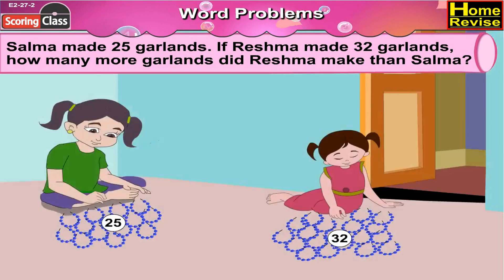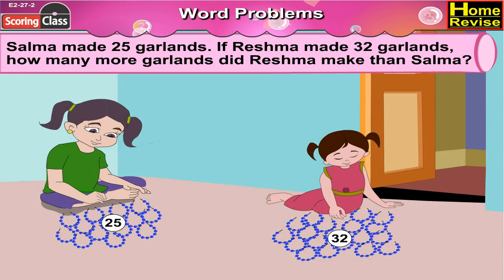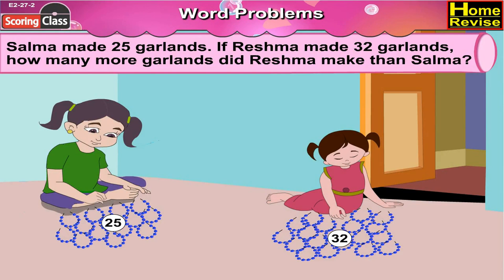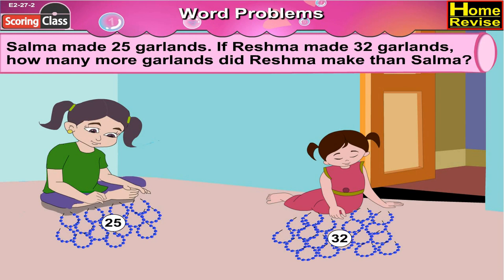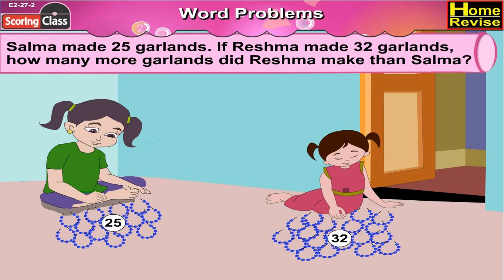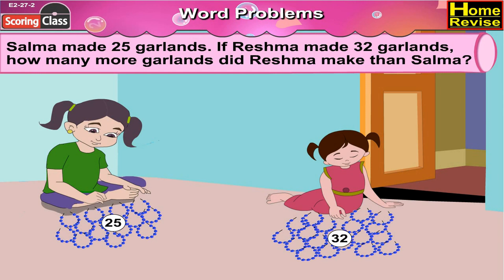If Reshma made 32 garlands, how many more garlands did Reshma make than Salma? Salma made 25 garlands and Reshma made 32 garlands.